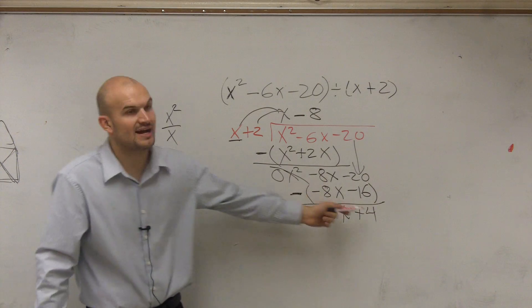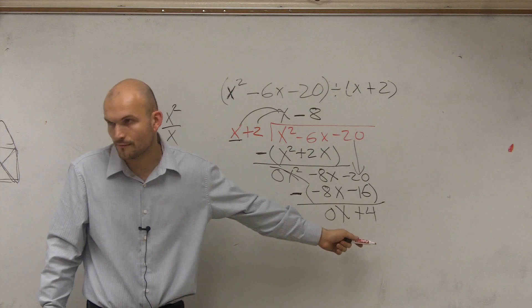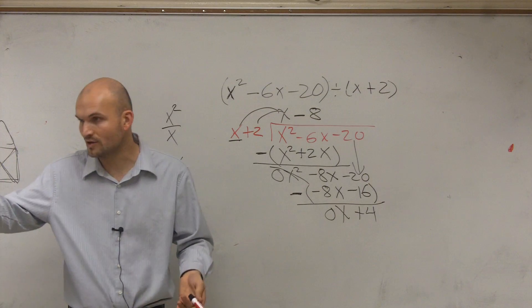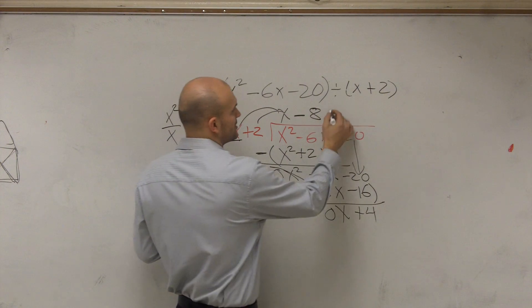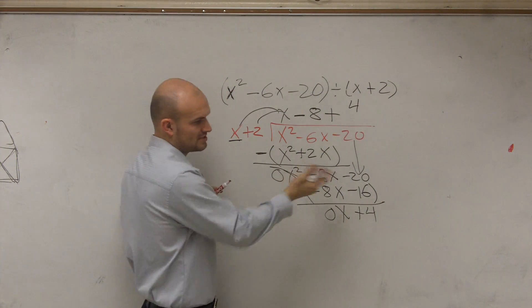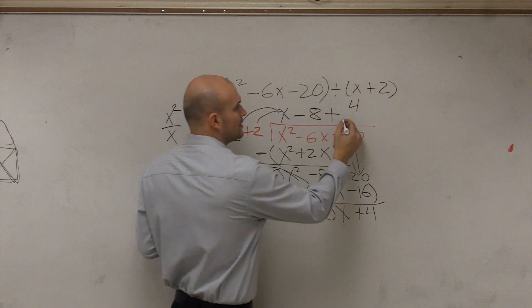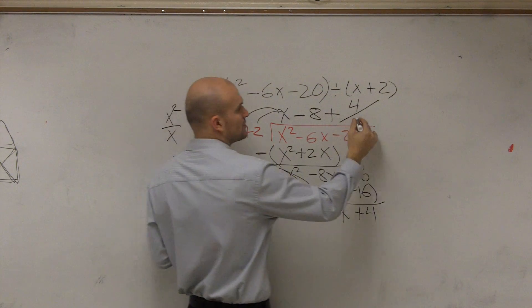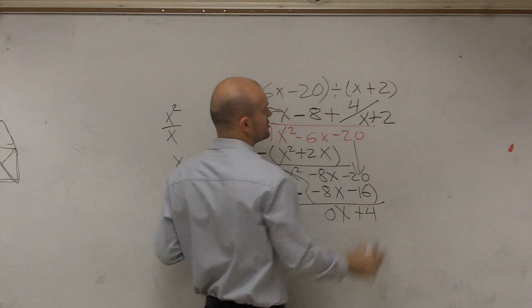Does x divide into 4? No. So what we do is, rather than writing the r4 like we used to, what we're going to do is we're going to say plus your remainder, or subtract if it was a negative remainder, 4 divided by your divisor, which is x plus 2.